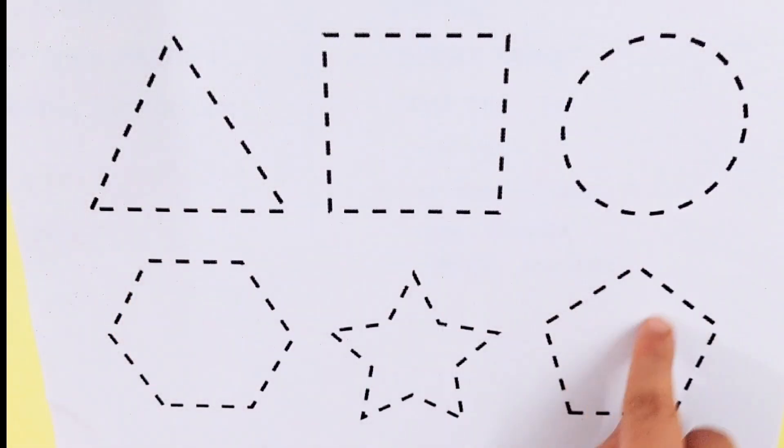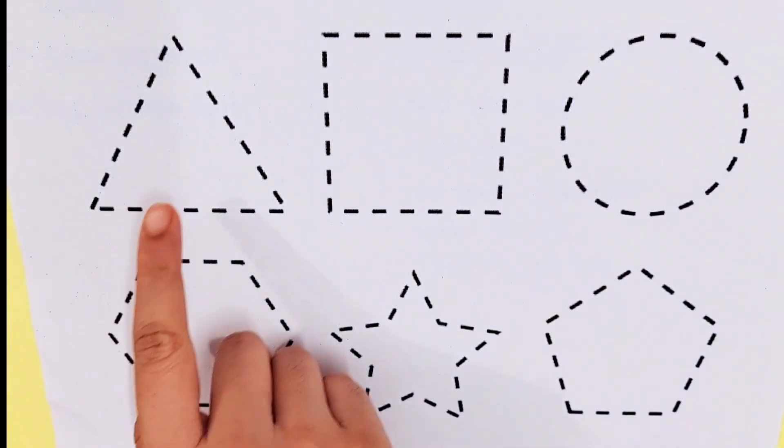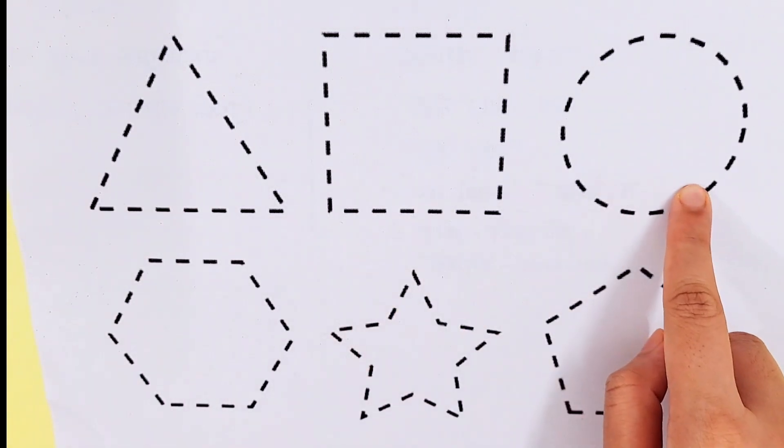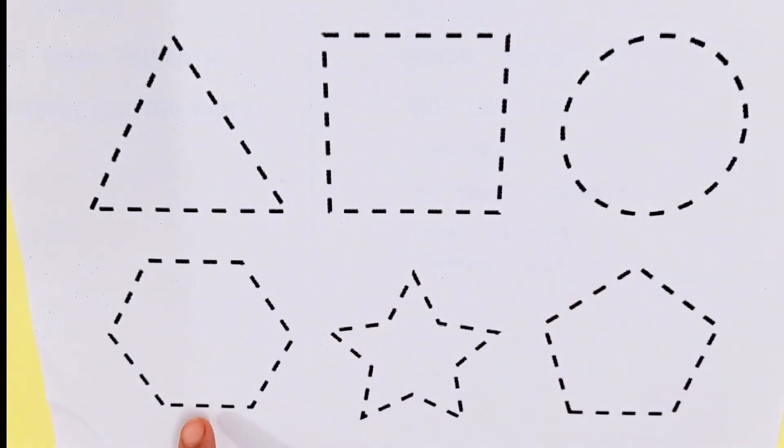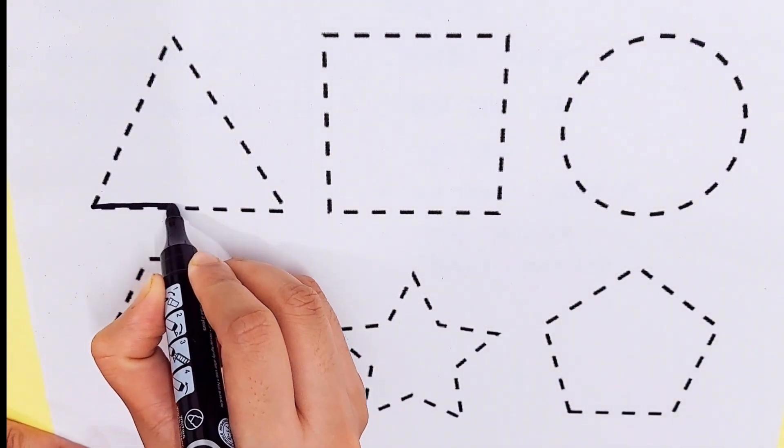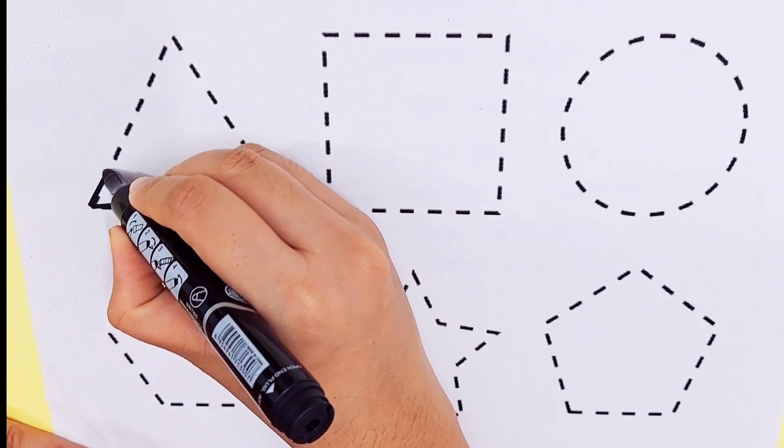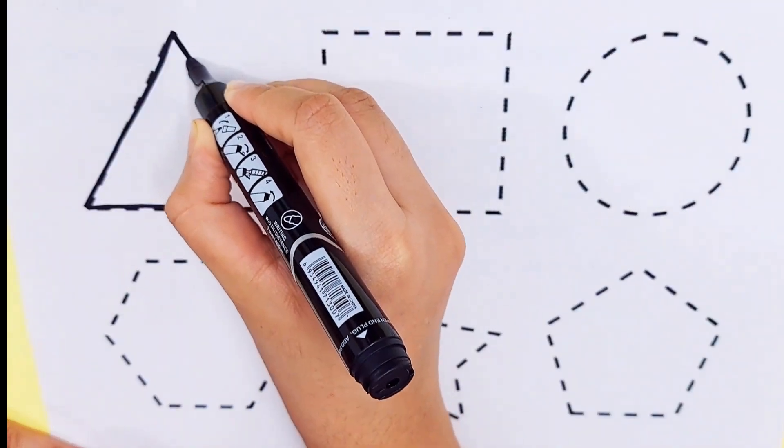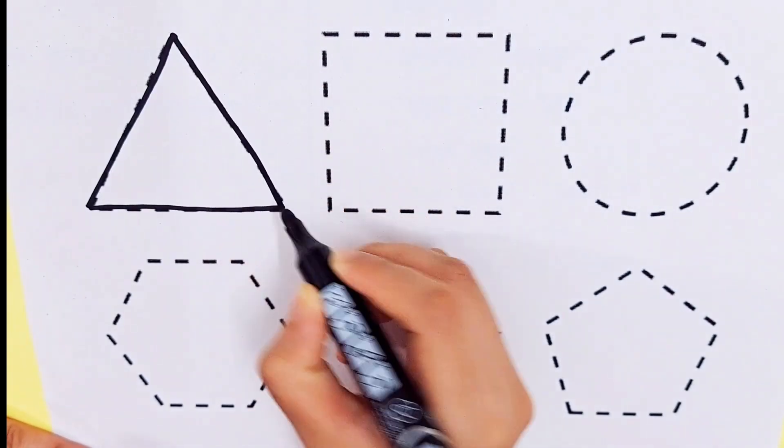Let's try to learn some 2D shapes. Triangle, square, circle, hexagon, star, pentagon. Blue color, red color, light green color, yellow color, blue color.